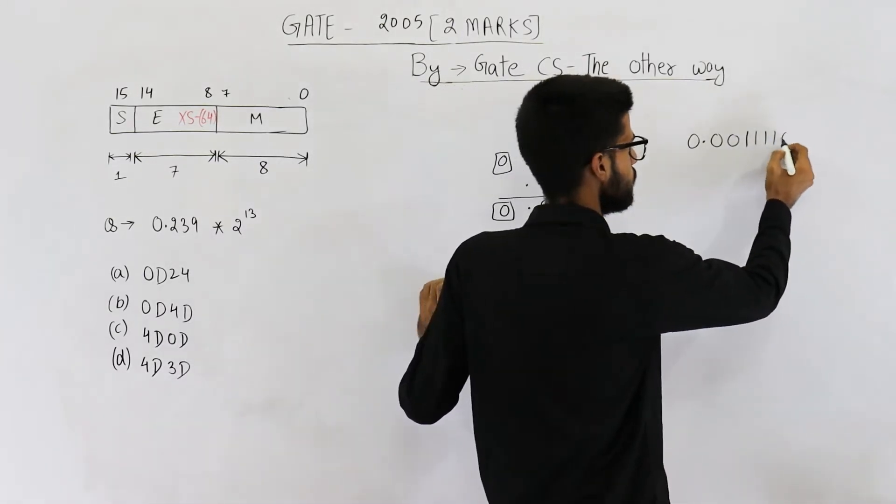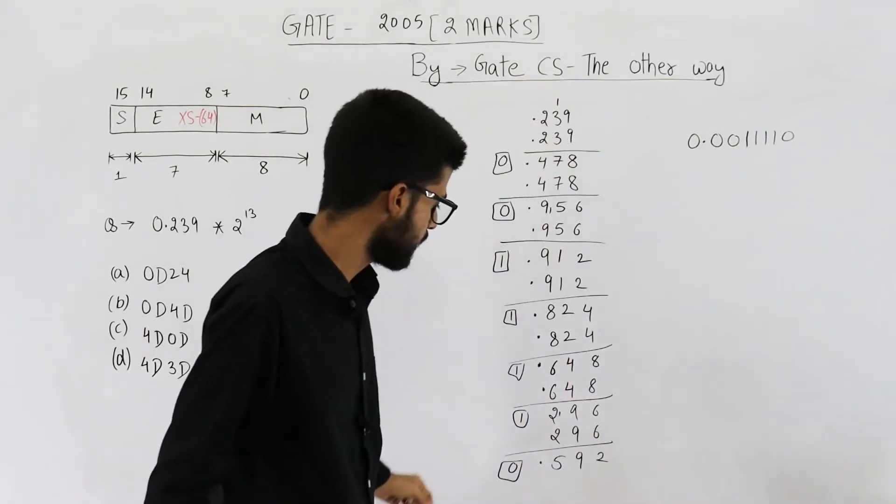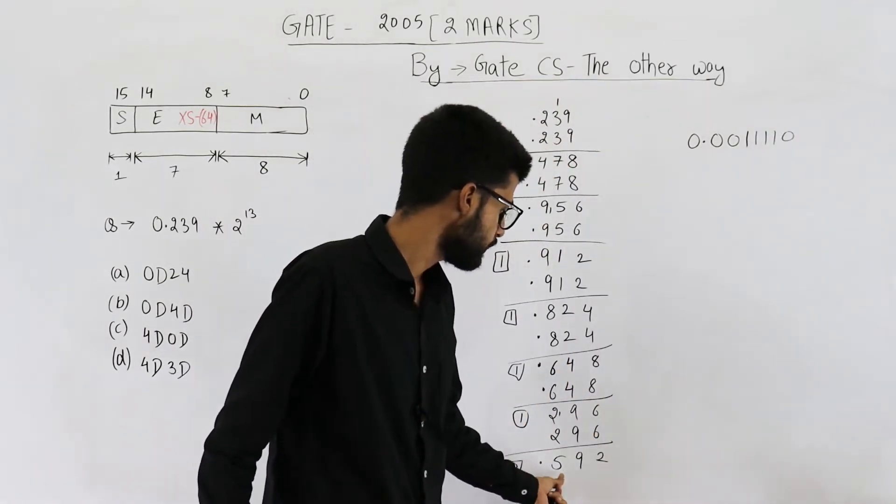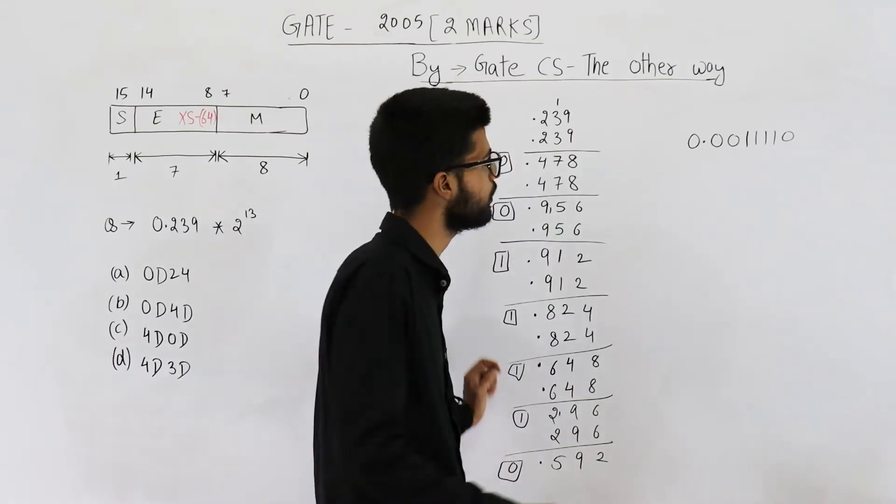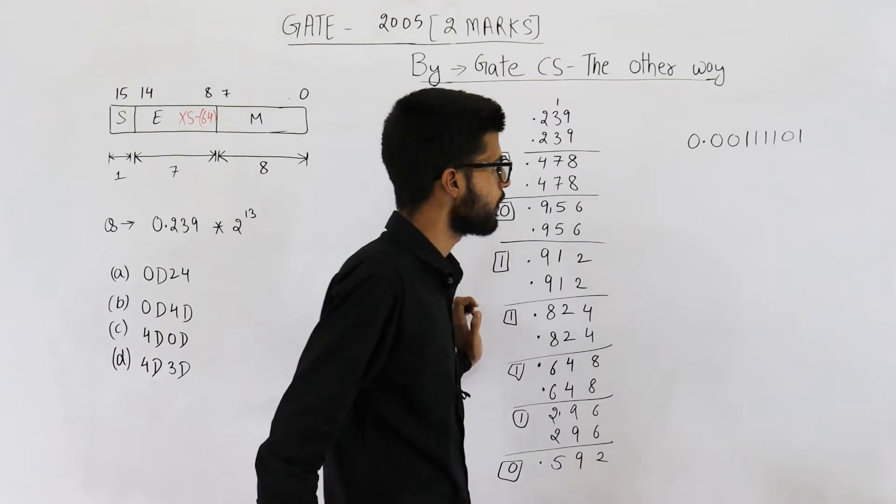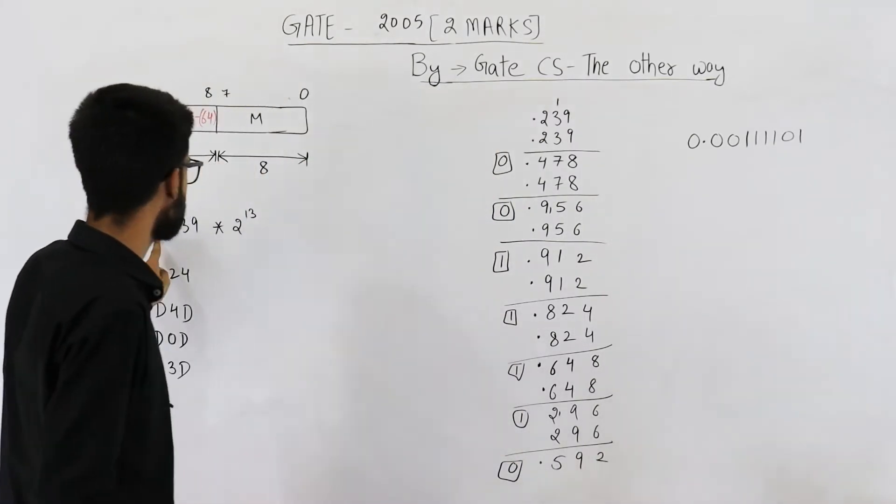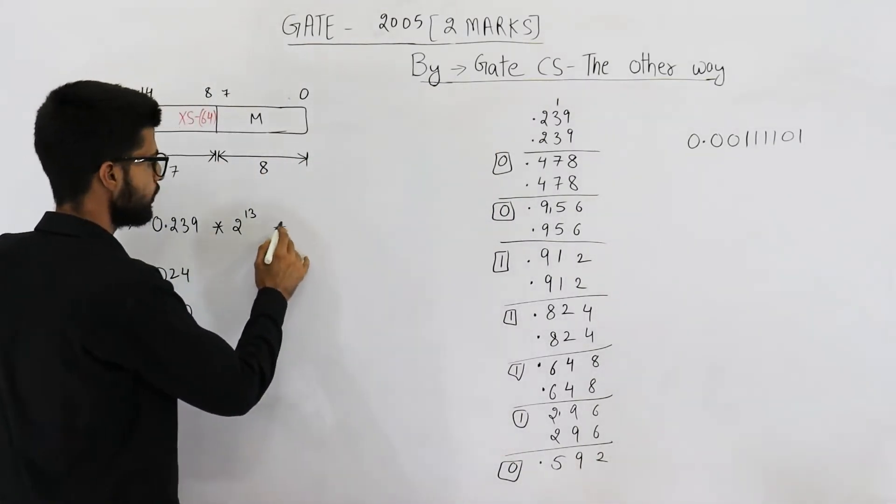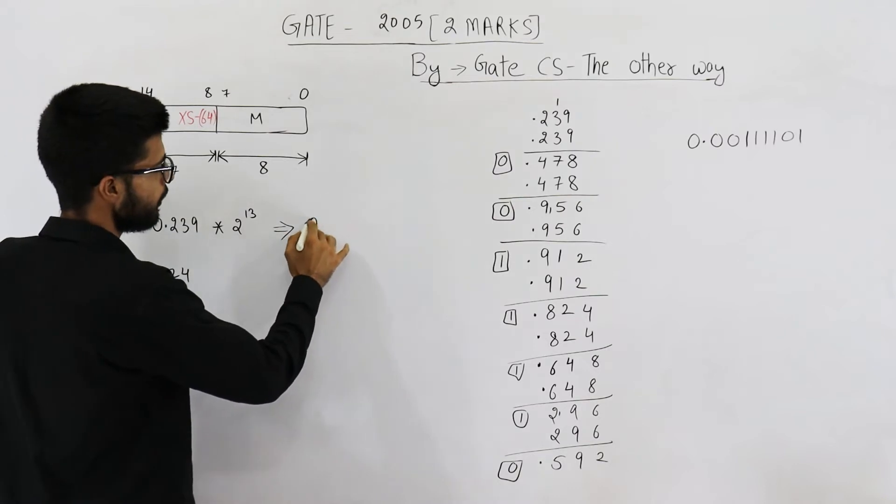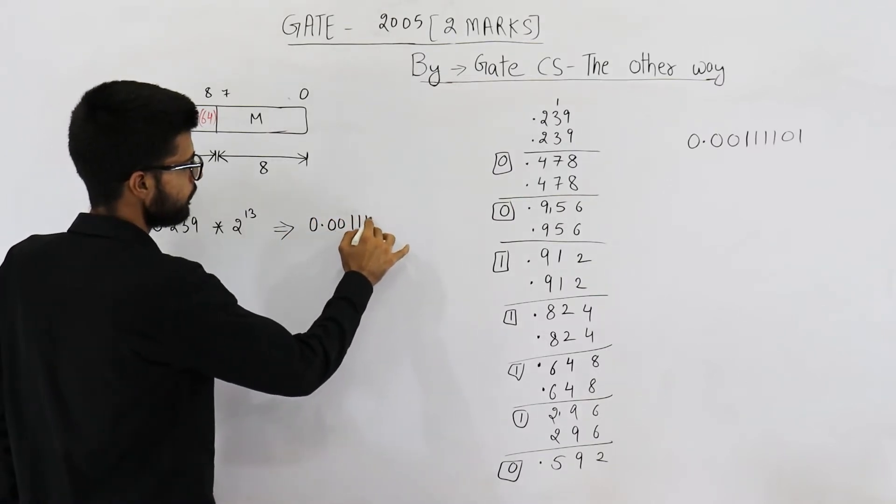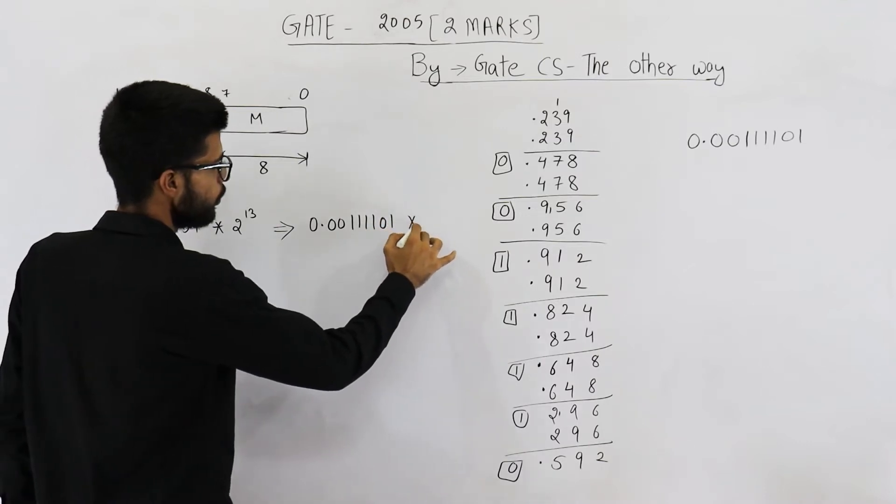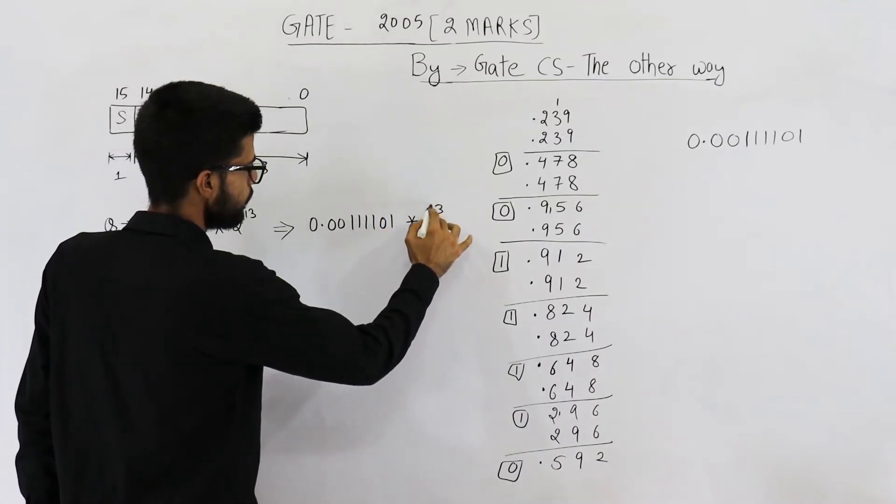Now let us just continue this procedure and I will add 0.912 again. So you can see we are going to get 0.001111. So 0.00111110. Let us see what will be the next bit. So 0.59 plus 0.59 will be more than 1. So here we will be having 1.